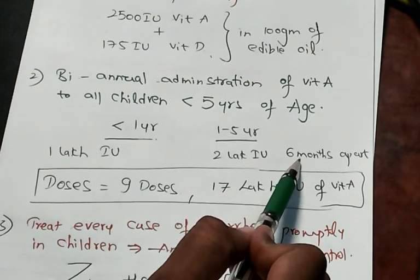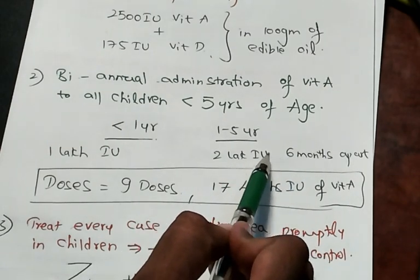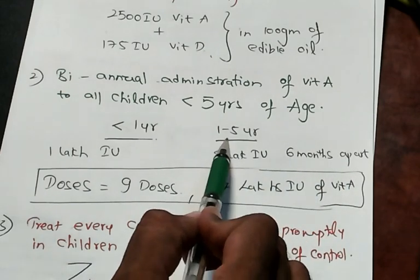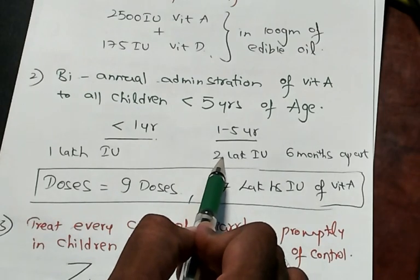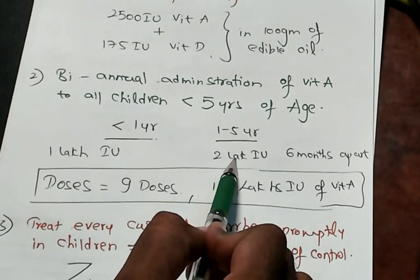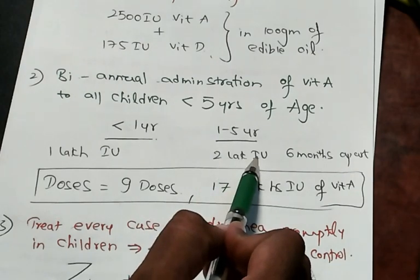2 lakh international units, 6 months apart, 2 times. So every year if you give 2 lakh international units 2 times, you are giving totally 4 lakhs.